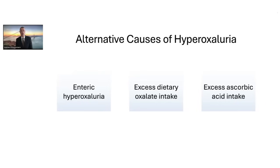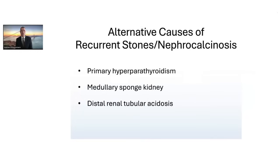It's important to screen for all these conditions when evaluating patients, including prior bowel surgery, dietary intake of high-oxalate foods, and any supplements or vitamins. There are also alternative causes of recurrent stones and nephrocalcinosis outside primary hyperoxaluria. Common conditions include primary hyperparathyroidism, medullary sponge kidney, and distal renal tubular acidosis. These patients would not be expected to have high urinary oxalate levels like in primary hyperoxaluria, which helps differentiate these conditions from PH.